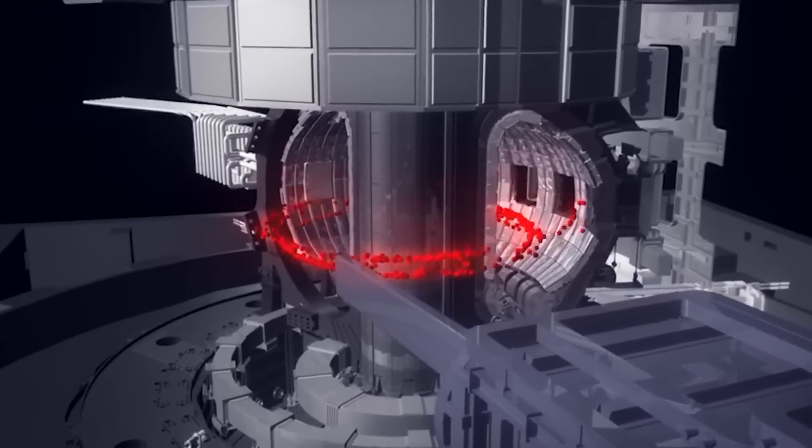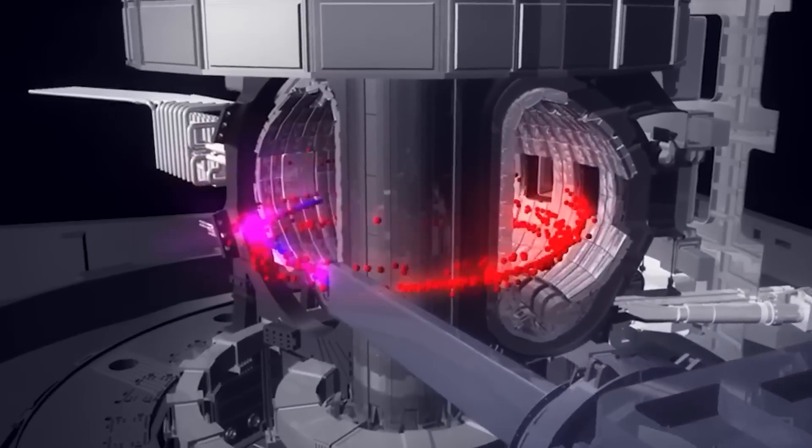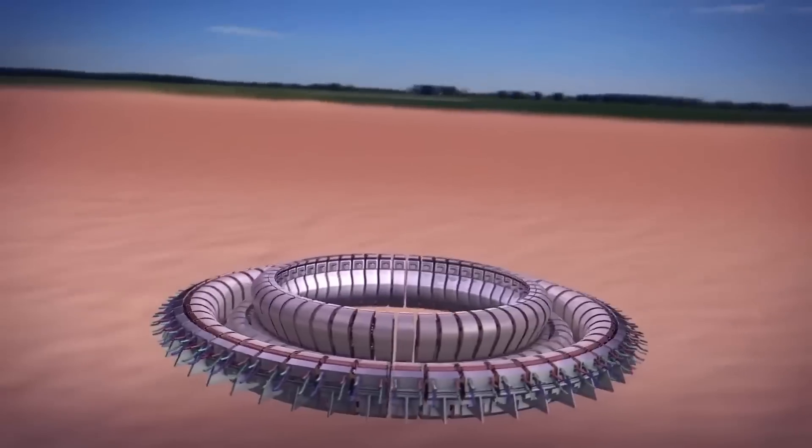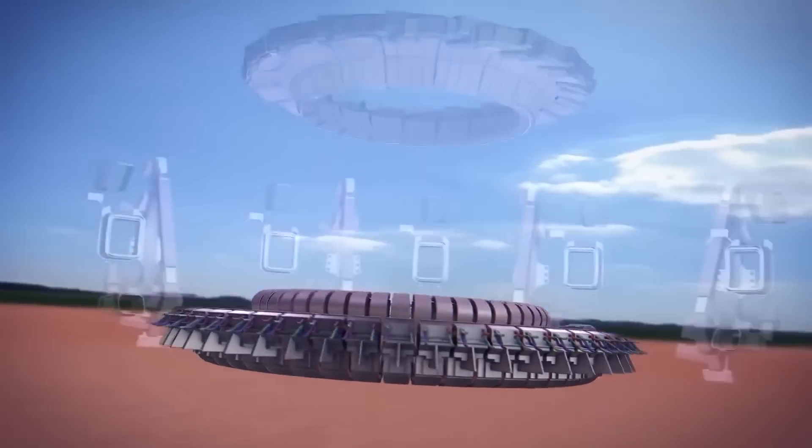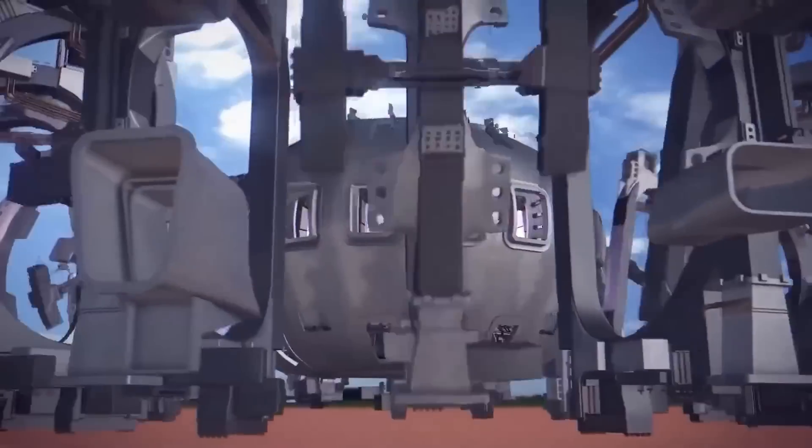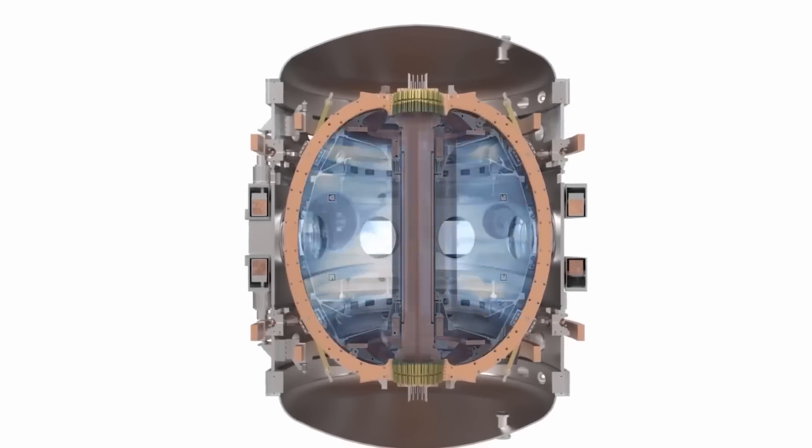In a Tokamak, magnetic field coils confine plasma particles to allow the plasma to achieve the conditions necessary for fusion. The heart of a Tokamak is a donut-shaped vacuum chamber. Within the chamber, gaseous hydrogen fuel is placed under extreme heat and pressure, turning into plasma.